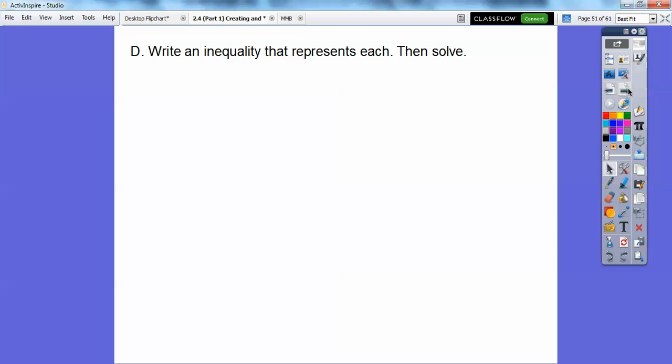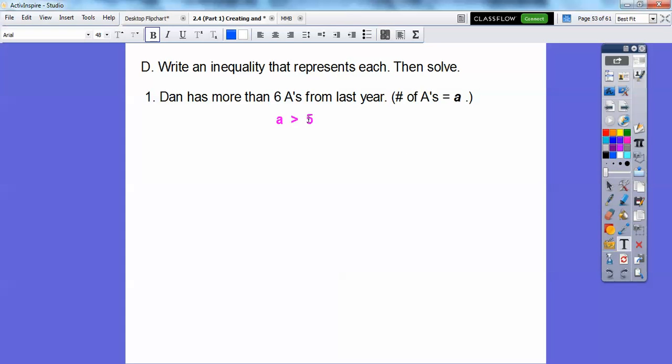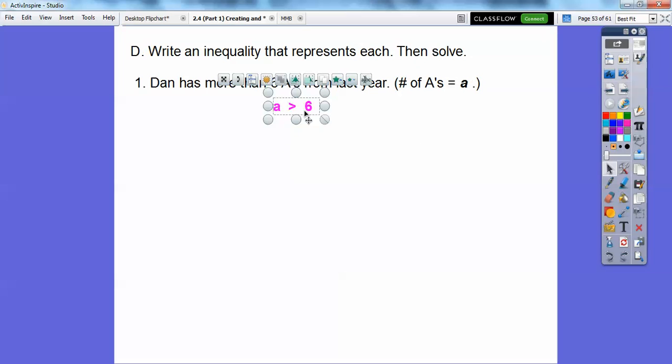All right, let's just wrap it up here. So write an inequality that represents each, and then solve. So Dan has more than 6 A's from last year, and the number of A's is going to equal A. So that just means A is going to be greater than or equal to 6. I'm sorry, not equal to. This should be greater than 6 right here. Let me fix that right there. My bad, as my students say.